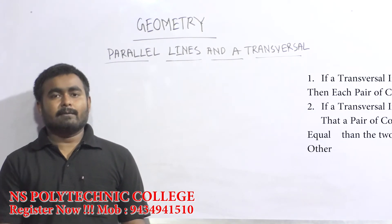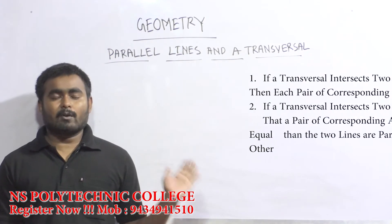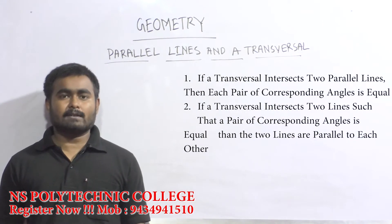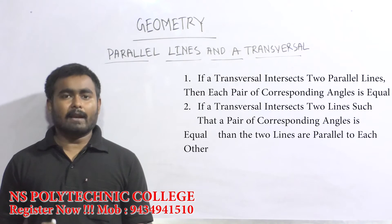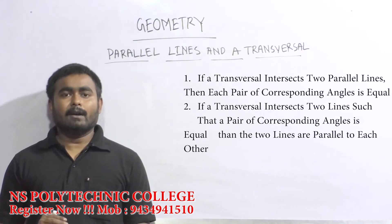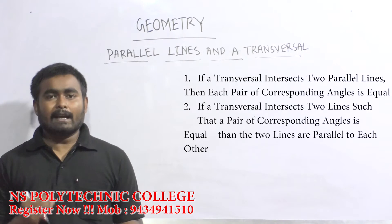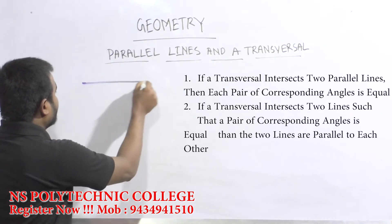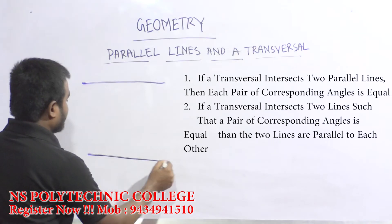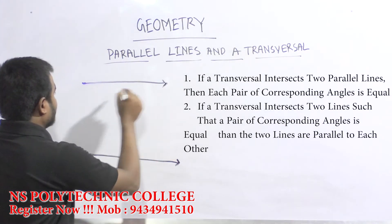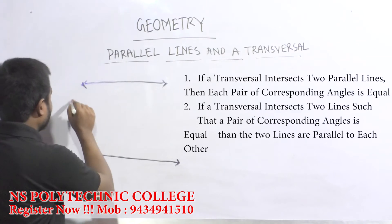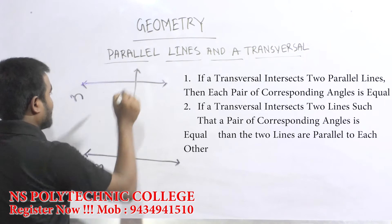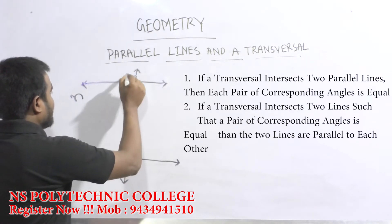तो हम लोग देखते हैं कि first formula क्या है। यहाँ पर लिखा हुआ है: "If a transversal intersects two parallel lines, then each pair of corresponding angles are equal." तो यह formula बोल रहे हैं कि अगर हम लोग दो parallel line draw करें और इसका नाम M और N दें, और यह transversal है, तो इसका corresponding angle — यह number one है।